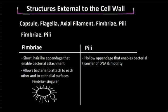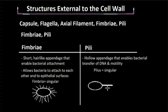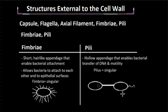Fimbriae can be found at one end of the bacterium or spread all over evenly. The pilus is a hollow appendage that allows bacteria to transfer their DNA and to move. The plural of pilus is referred to as pili. For example, if a bacterium had a plasmid containing genes that encode for antibiotic resistance, the pilus would serve as a passage linking that bacterium to a new bacterium that doesn't have the antibiotic resistance gene. This pilus is called the conjugative pilus or the sex pilus.